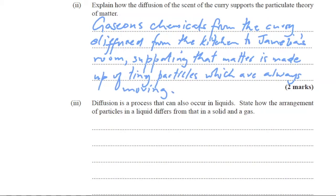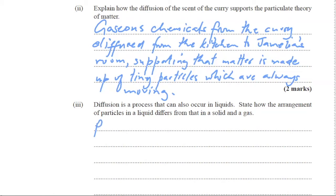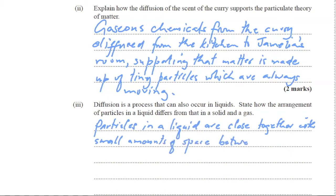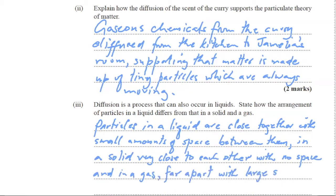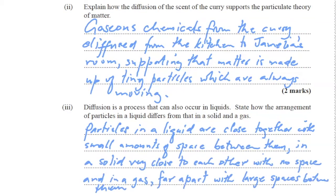Part three. Diffusion is a process that can occur in liquids. State how the arrangement of particles in a liquid differs from that in a solid. Particles in a liquid are close together with small amounts of space between them. The particles can slide over each other. In a solid, they are very close to each other with little or no space, and in a gas, they're far apart with large amounts of space between them.